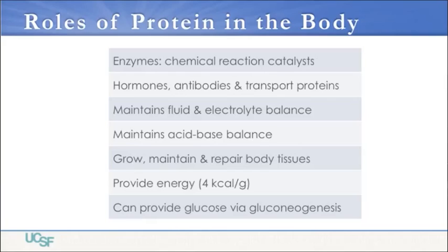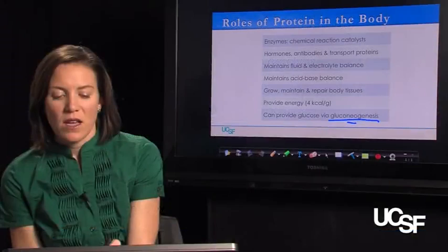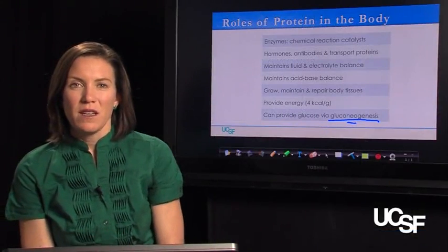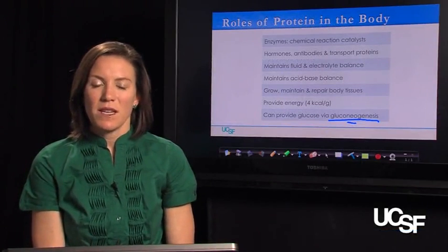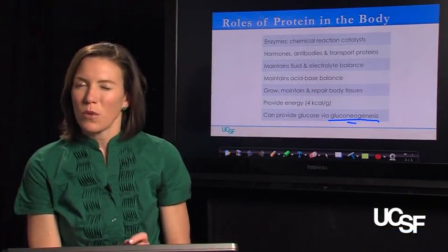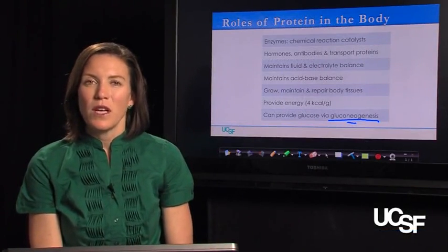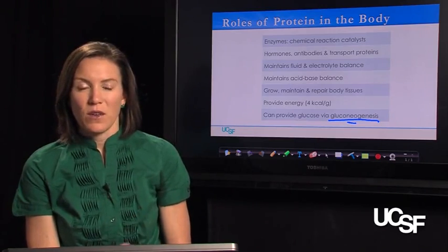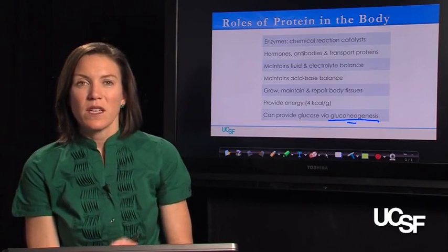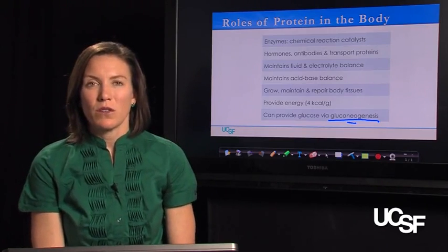In certain cases, protein can actually provide you glucose through the process of gluconeogenesis — neo meaning new, genesis meaning to make. Your body can, although it would prefer not to, break down dietary or body proteins in order to make glucose.